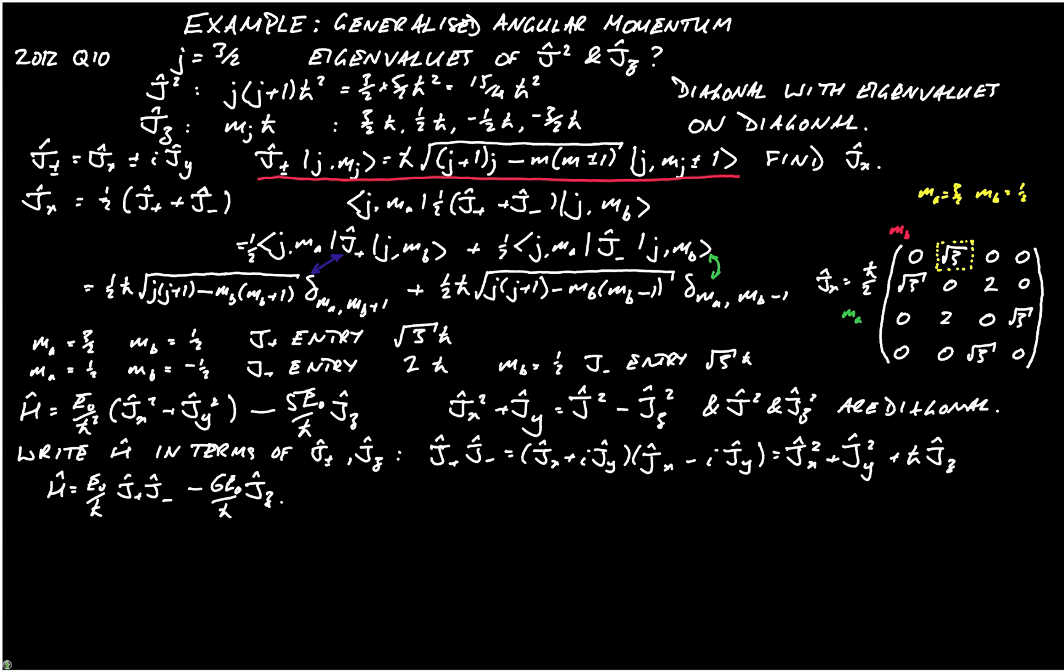And then the final part of the question asks you for h in matrix form. You can derive this using either of the approaches. You can use the j plus j minus, or you can use the original form in terms of jx squared and jy squared and jz squared. Either way, when you do this, you'll discover quite quickly that you end up with the following form.